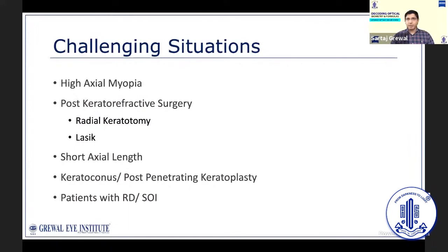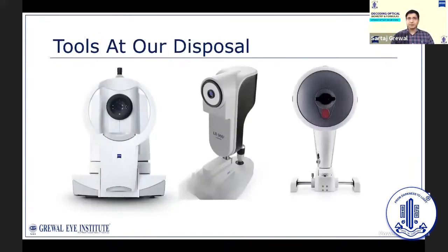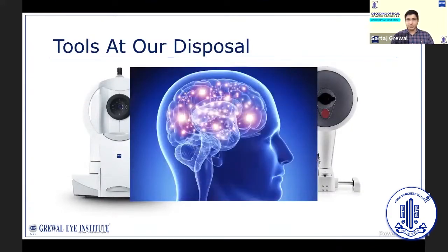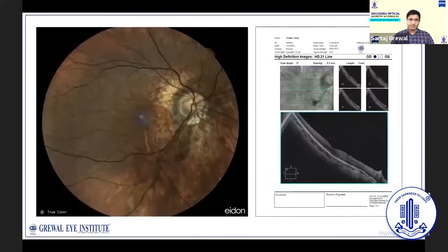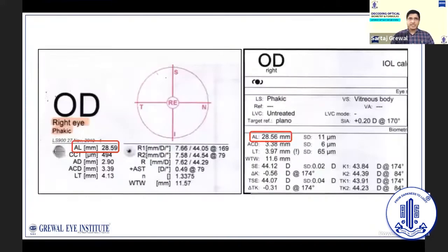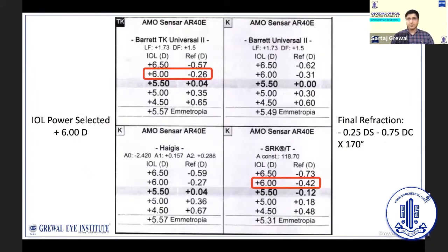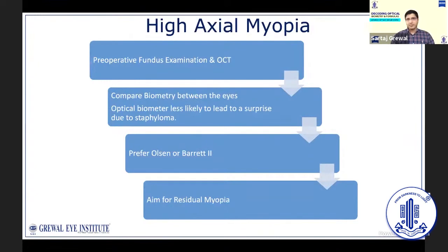We can face many challenging situations when performing biometry and IOL power calculations. For a patient with long axial length and posterior staphyloma, optical biometers afford the advantage of a higher chance of measuring length along the visual axis due to the necessity of fixation. We can see good correlation between the LS900 and the IOL Master 700. In this case with an IOL power of +6 diopters, the Barrett II and the SRK/T — even without the Wang-Koch modification — were both accurate. For eyes with high axial myopia, always perform a detailed preoperative fundus examination and OCT, prefer the Olsen or Barrett II formulas, and always aim for residual myopia.